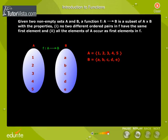Let us understand the functions with this example. A is equal to set 1, 2, 3, 4, 5. B is equal to set a, b, c, d, e.